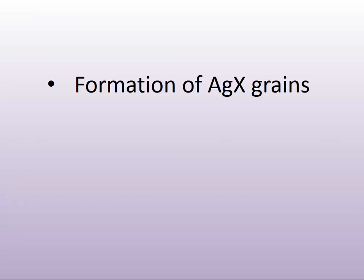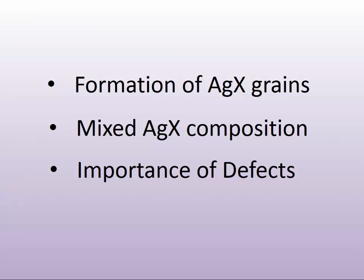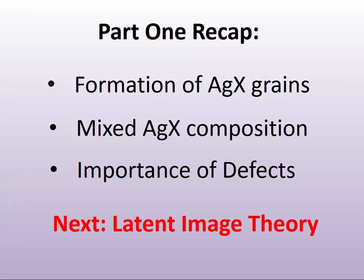So now we know how silver halide grains are formed, we know about their mixed composition, we know the importance of defects, and that defects are actually very good for photographic processes. It's going to take a study of what is known as latent image theory to find out how all these chemical and physical properties fit together to allow silver halide to be the light-sensitive recording material used for the better part of the 19th and 20th century.